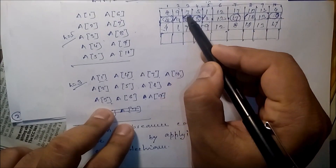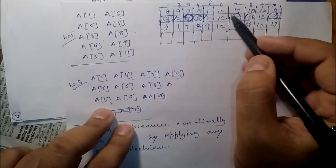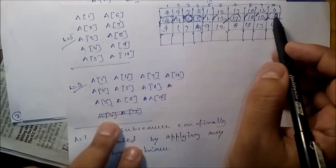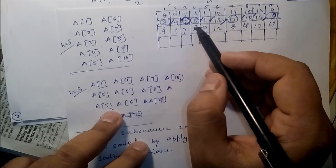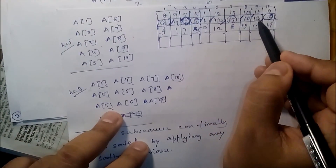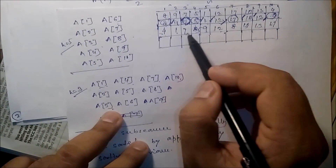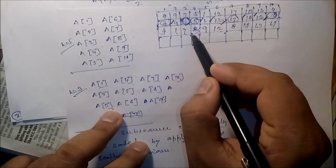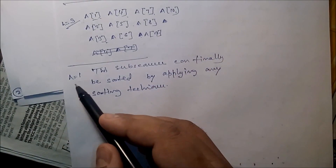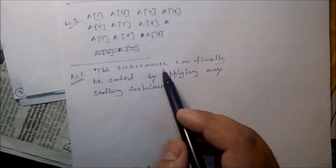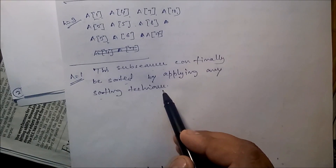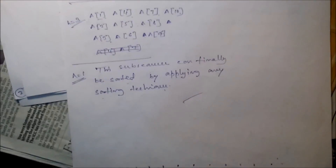Next compare positions 3, 6, 9: values 7, 12, 13 — already in sorted order. So after h equal to 3, the resulting array is: 4, 1, 7, 5, 9, 12, 8, 10, 13, 17. When h equals 1, the subsequences can finally be sorted by applying any sorting technique.